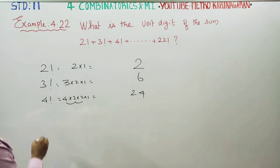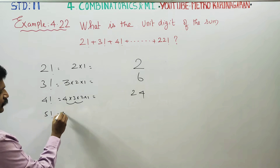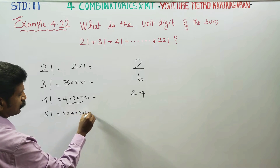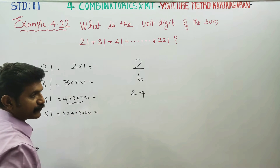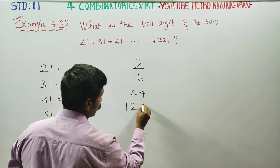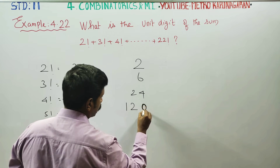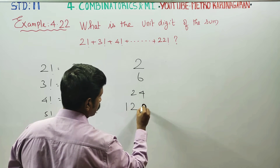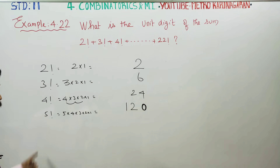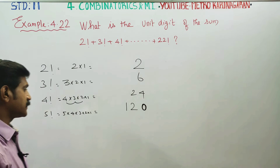Then, 5 factorial is 5 into 4 into 3 into 2 into 1, therefore the answer will be 120. Zero starts here — from 5 factorial, zero starts here.